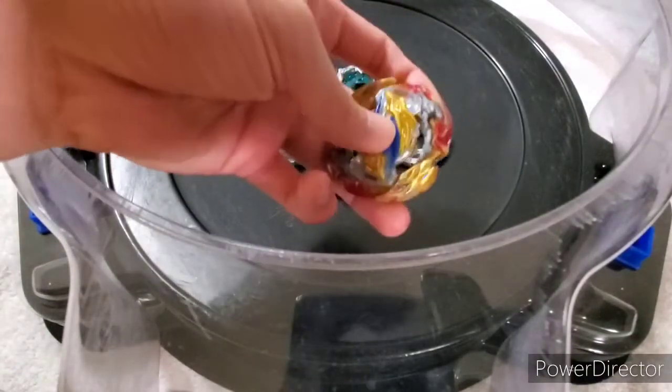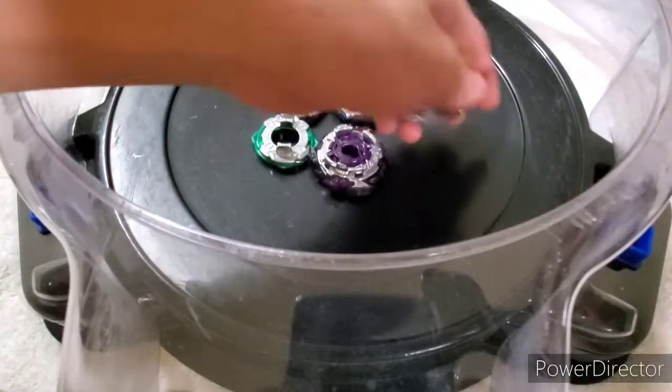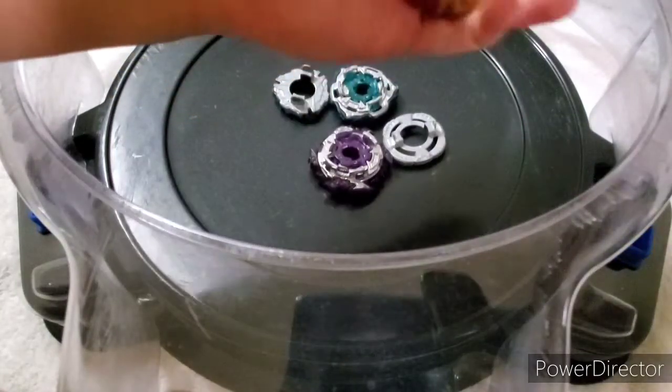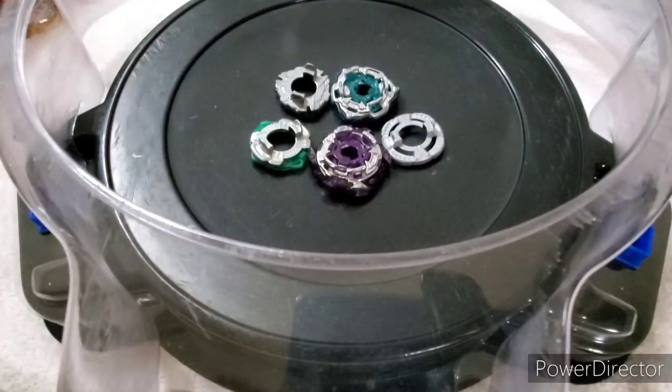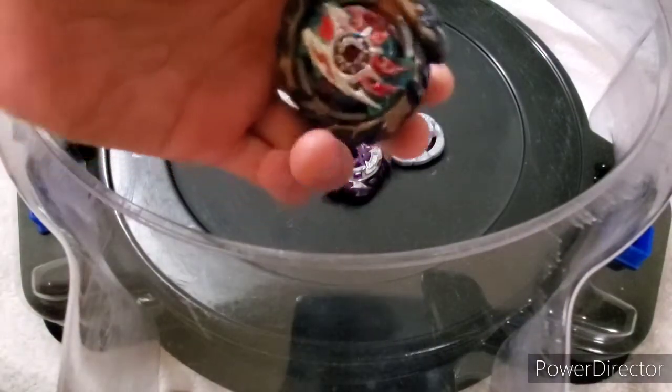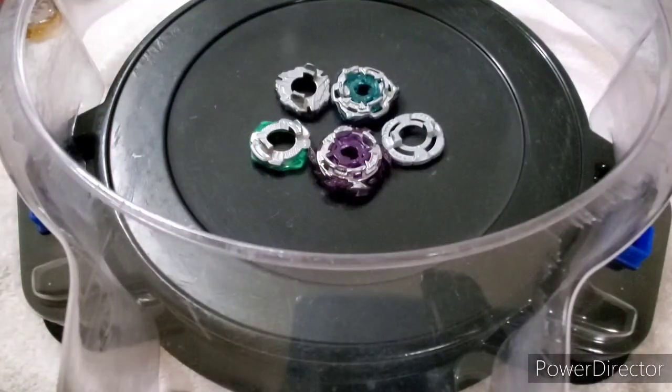You're just going to want to think about what disc pairs well with a layer. In terms of something like Lord, it's a stamina and defensive layer, so you're going to be wanting to put on something like Wheel or 0 and Cross. If you still have the burst stoppers on your Lord layer, you can put on something like Vanguard and Bearing, or 0 and Bearing. That is all for discs now, and let's move on to the drivers.